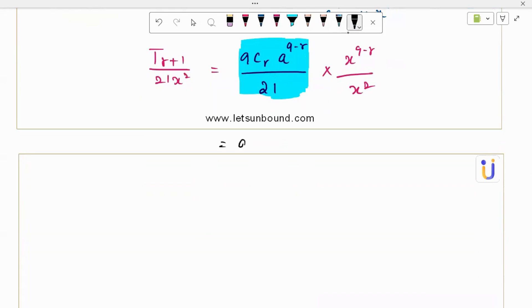So for simplifying further, it's 9Cr over 21 a power 9 minus r times x power 9 minus r. Both have same base and if you divide, you subtract the exponent 9 minus r minus 2. And this will be 9Cr a power 9 minus r by 21 times x power 7 minus, oh 9 minus 2 is just 7, 7 minus r.